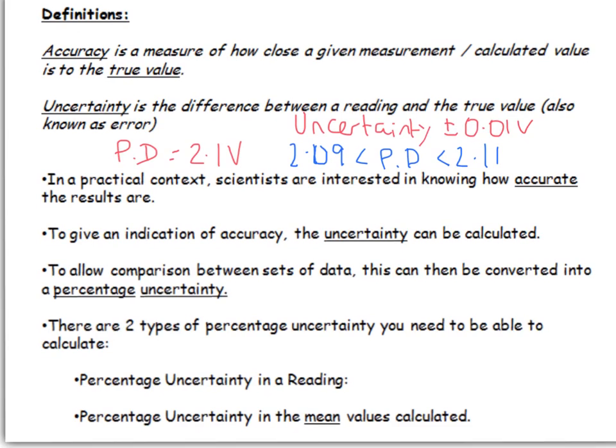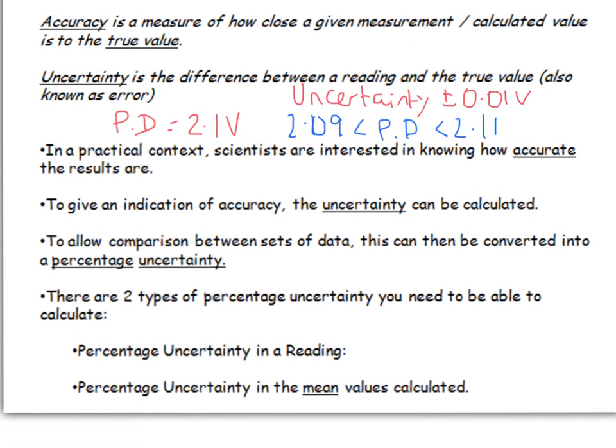So what are those two? First of all there's the percentage uncertainty in a reading. So in a given measurement what's the percentage uncertainty? And what's the percentage uncertainty in the mean values you've calculated at the end? Because we take repeats and calculate an average to try and improve the accuracy, but actually have we reduced the uncertainty? The reason we use percentages is to allow us to compare different readings and different sets of data. So it's difficult to compare a 100 ohm reading with one ohm reading because you're using different equipment or different settings. Percentage uncertainty allows you to compare the uncertainty between those two results.